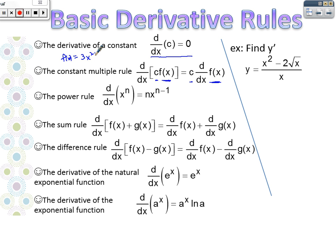the 3 would be our constant. That's this piece right here. And the x squared would be our function. So we would, basically, our derivative, we would leave the 3 alone.